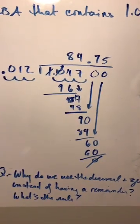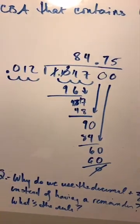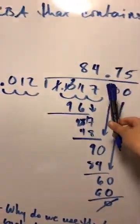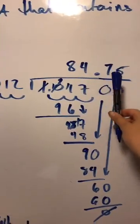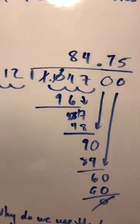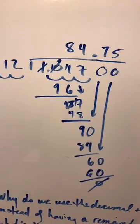So the general rule of thumb when you have a decimal is to go three spaces past the decimal to get your answer.